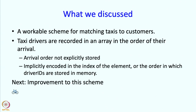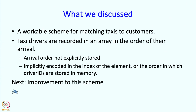So what have we discussed? We have discussed a workable scheme for matching taxis to customers. Taxi drivers are recorded in an array in the order of their arrival, and the arrival order is not explicitly stored — just because the IDs are in a certain order in the array, we know the order in which they arrived. In the next segment we are going to see some improvements to this scheme.